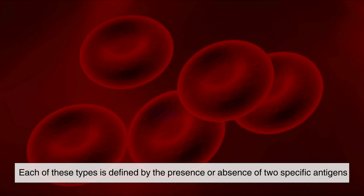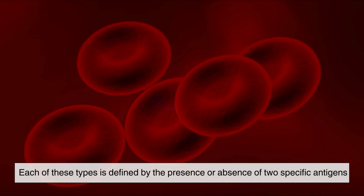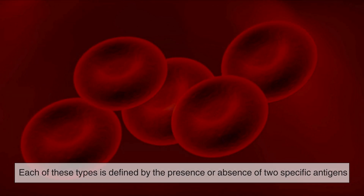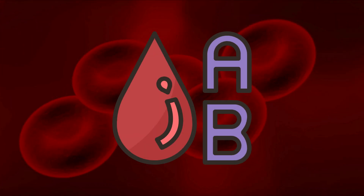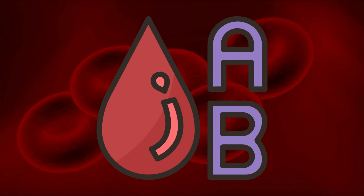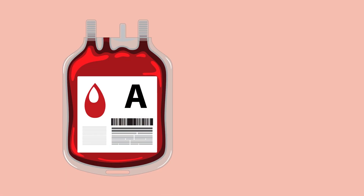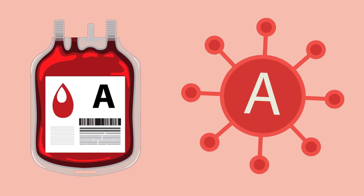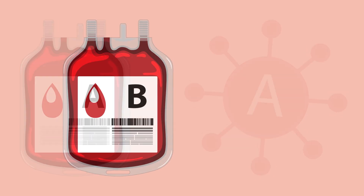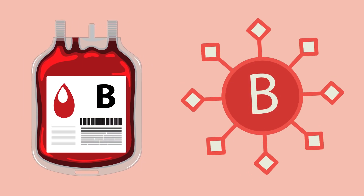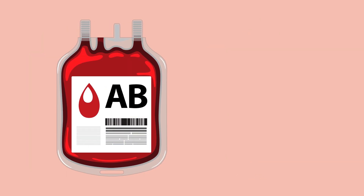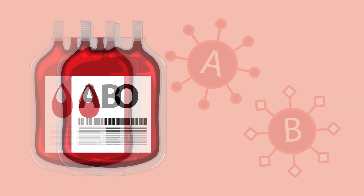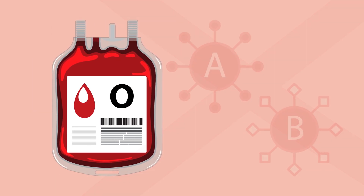Each of these types is defined by the presence or absence of two specific antigens, A and B, on the surface of red blood cells. If you have type A blood, your cells have the A antigen. Type B blood has the B antigen. Type AB has both A and B antigens, while type O has neither.